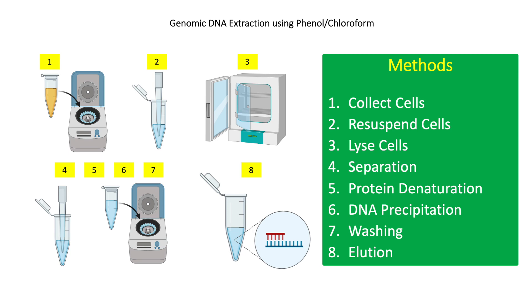For step seven, wash the DNA precipitate with 70% ethanol. Centrifuge at 13,000 RPM for 10 minutes, then discard the supernatant. Remove the remaining ethanol using a pipette. Air dry at room temperature.